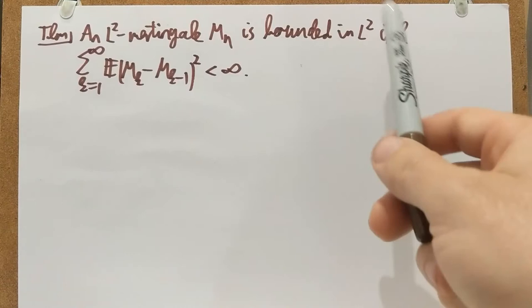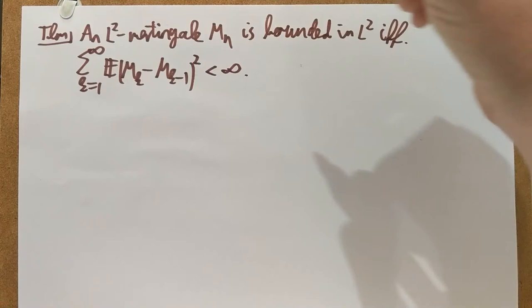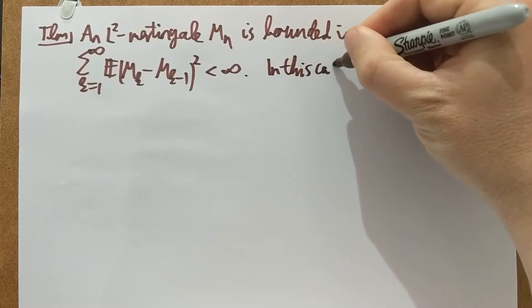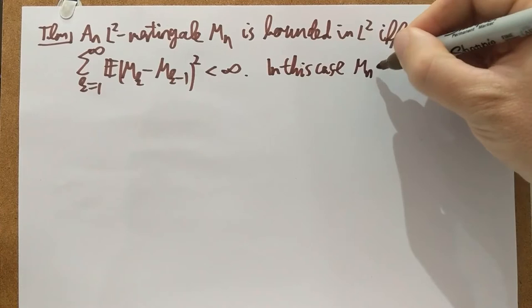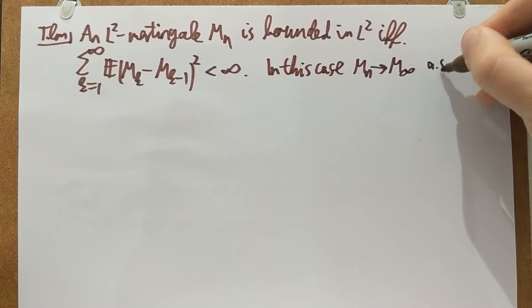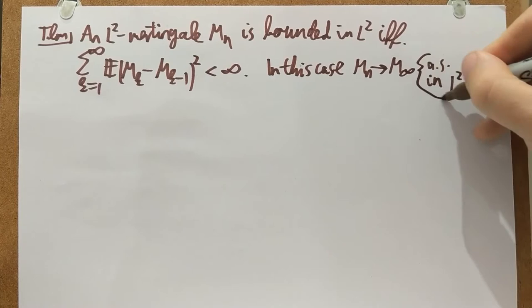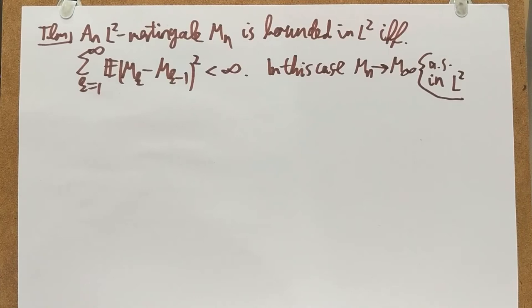That happens if and only if this infinite sum is finite. In this case, we have almost sure and L2 convergence: MN converges to a limit M∞ almost surely and also in L2 — both. Almost sure and L2 convergence, which of course implies that M∞ is finite almost surely and is in L2. So if you have an L2-bounded martingale, you can characterize that by this infinite sum being finite, and then you have a limit both almost surely and in L2.